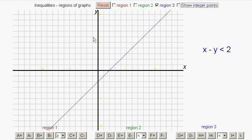So let's look at a point the other side, probably the easiest one, is nought nought. Nought minus nought is nought. Now, nought is less than 2. So in fact, the region is above the line.